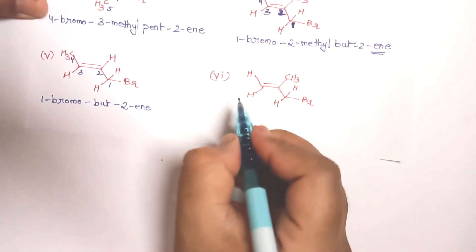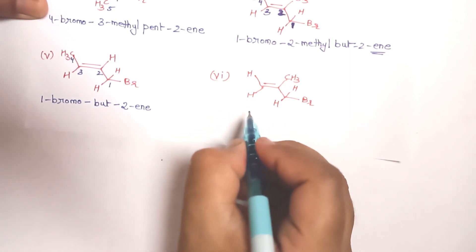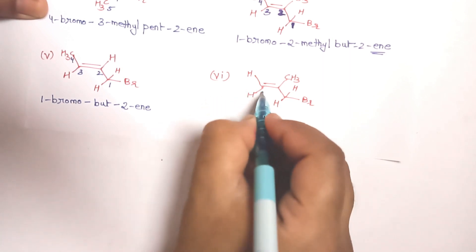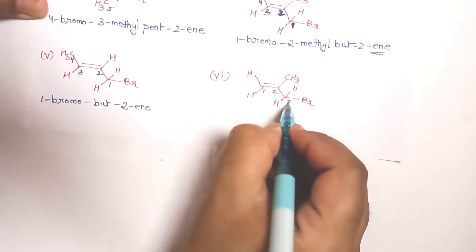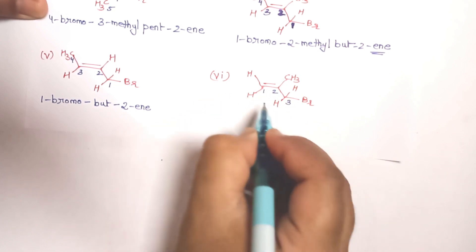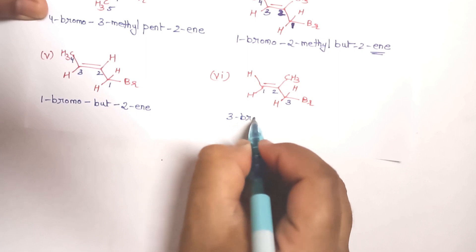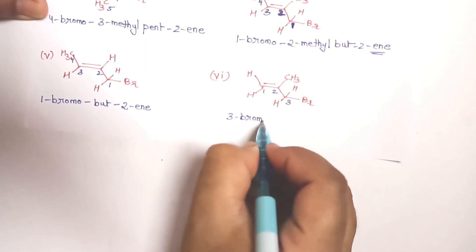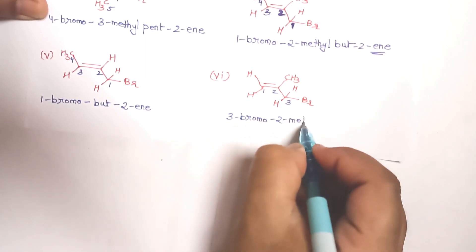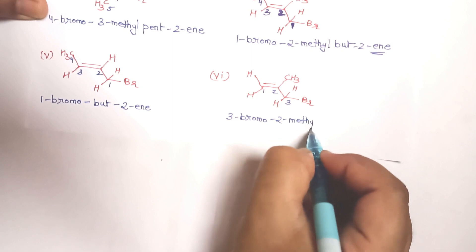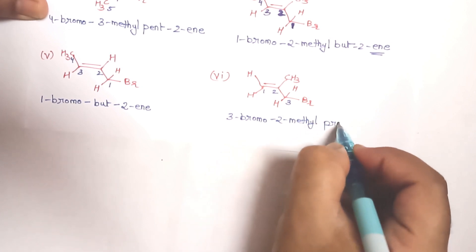For the last example, numbering 1, 2, 3: the compound has 3 carbons — 'prop'; bromine at carbon 3 — 3-bromo; methyl group at carbon 2 — 2-methyl; and it is an alkene so 'propene'. The name is 3-bromo-2-methylpropene.